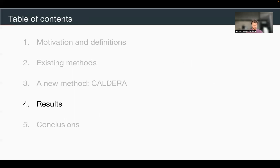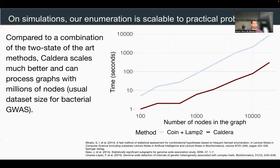What does this look like in practice? We compared with COIN, an algorithm that enumerates closed connected subgraphs but without this tree structure. We improved on COIN by using a more recent and powerful algorithm called LAMP2. Looking at running time versus graph size, at 20,000 nodes COIN takes nearly a day, whereas Caldera runs in about 200 seconds. This means we can scale to datasets of millions of nodes and apply the method to bacterial GWAS — which was not possible with previous methods.